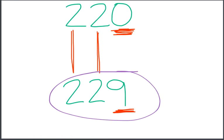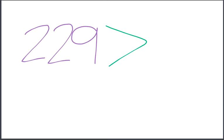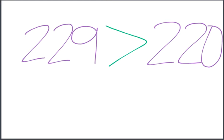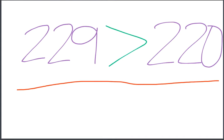And we can write that as: 229 is larger than 220, or is greater than 220. Do you remember our symbols? Is greater than, is less than, is equal to. This sentence says 229 is greater than 220. Remember that alligator mouth — he's eating that bigger number.